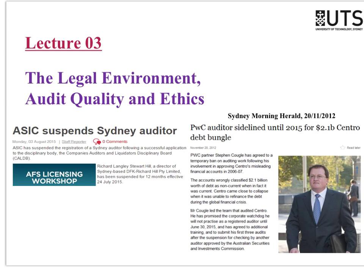On the front screen, on the first page of your slides, you will see two cases. The case on the left is about the fact that ASIC has the power to suspend auditors for doing the wrong thing. If auditors do the wrong thing, it is in ASIC's power to start proceedings to get those auditors suspended. The case on the right: there was a PwC partner who was banned from performing audits and signing audit reports for three years.